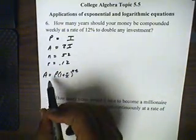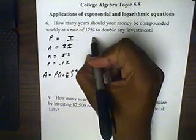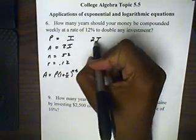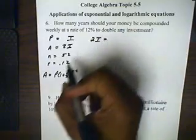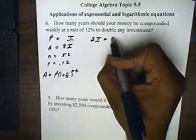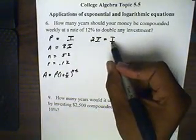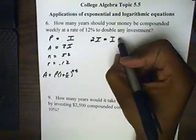So the amount that we want after everything is over with is going to be twice our investment. The principal, or what we're offering, is going to be I, which is the original investment. We don't know what it is, we just call it I though, that's the amount.